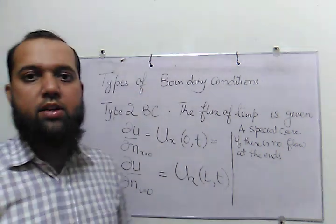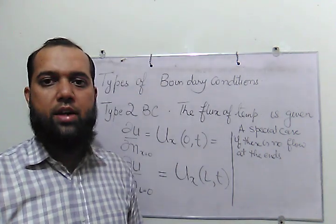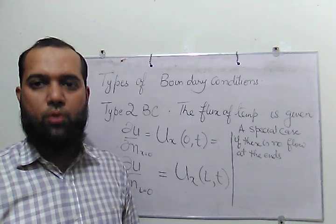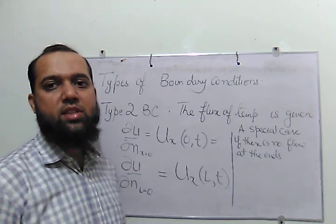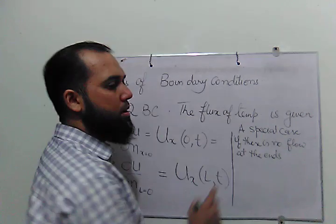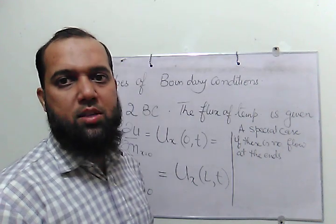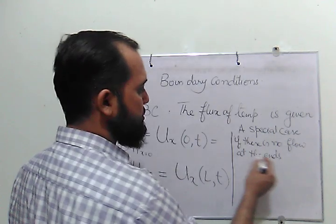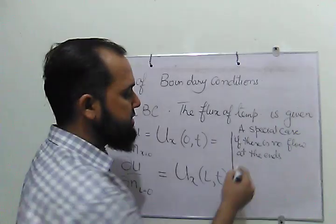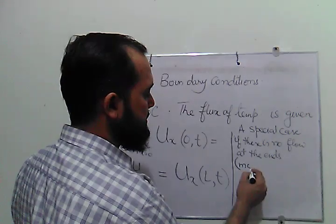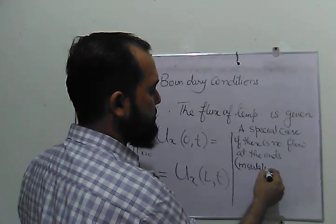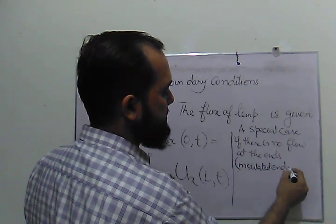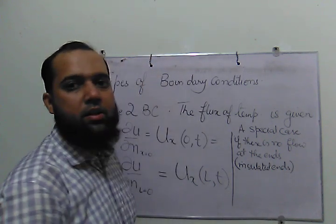Type 2 boundary condition has a special case: if there is no flow at the ends. I am not saying that there is zero temperature at the ends — I am saying there is no flow. Physically, this is possible if we insulate the ends. So if there is no flow at the ends, it is also called insulated ends.